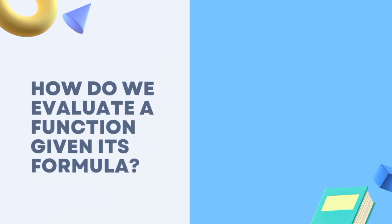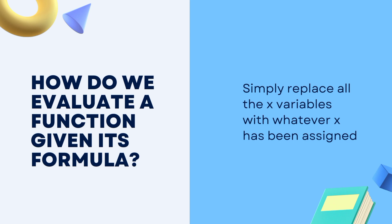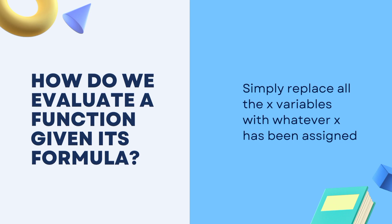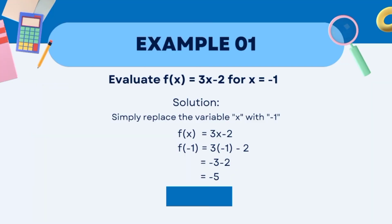How do we evaluate a function given this formula? Simply replace all the x variables with whatever x has been assigned. In our first example, we have: evaluate f(x) = 3x − 2 for x = −1. First, substitute the given value, negative 1, into the given variable, so f(−1) = 3 times negative 1 minus 2.